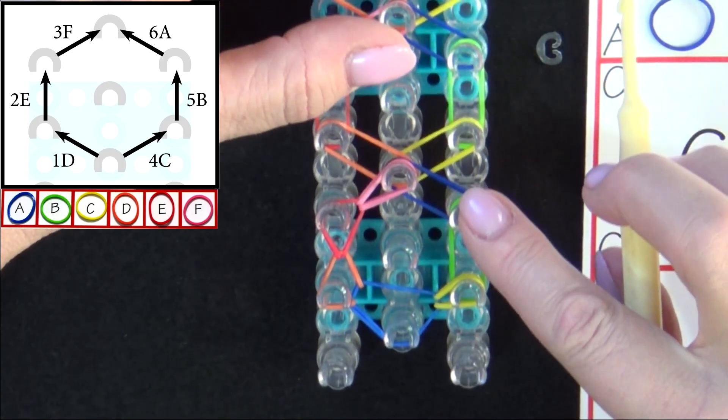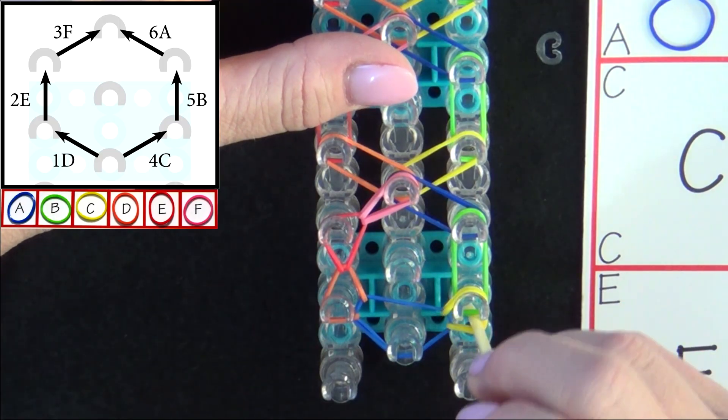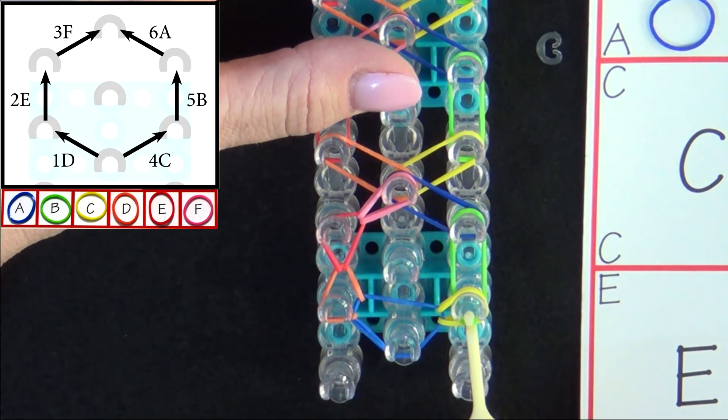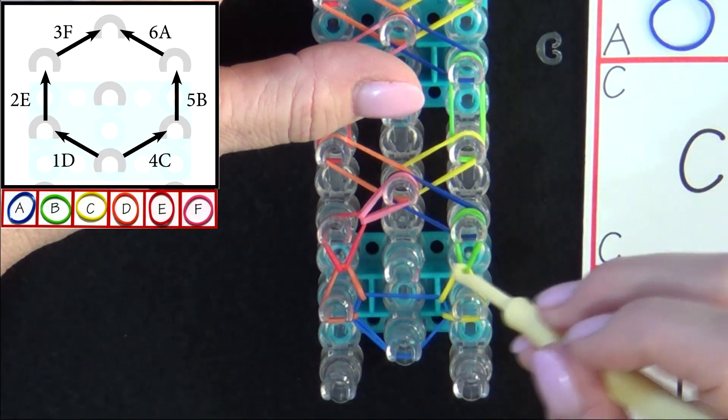Band 5B will be looping forward. Pull the C band back. Reach in and grab your B band and pull it to the forward pin.